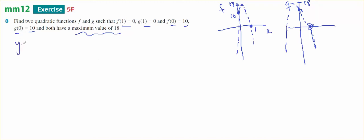I'm going to use the general rule which is ax squared plus bx plus c. And sub in f of 1 equals 0. And that will give me f of 0 and f of 1 equals 0. So 0 equals a plus b plus c.